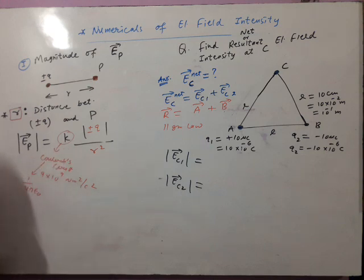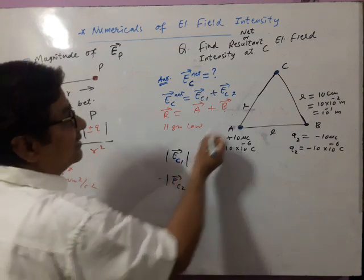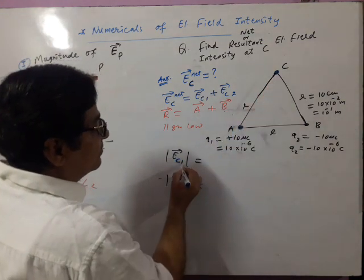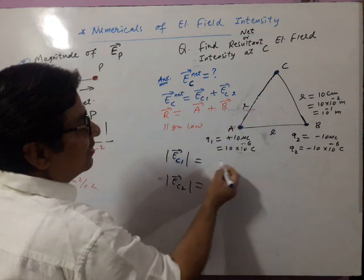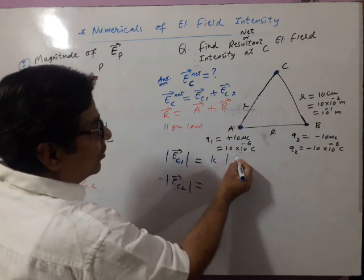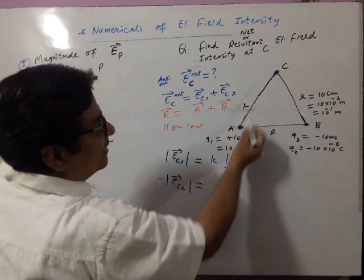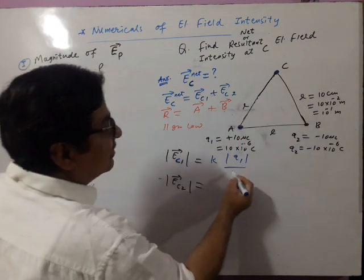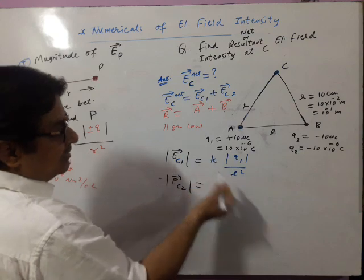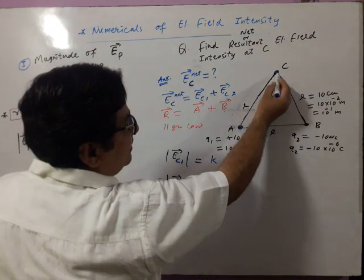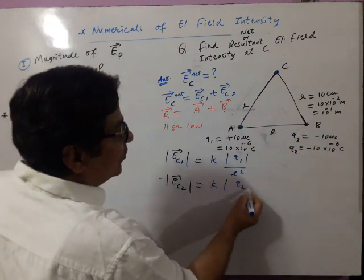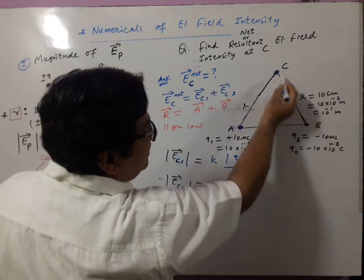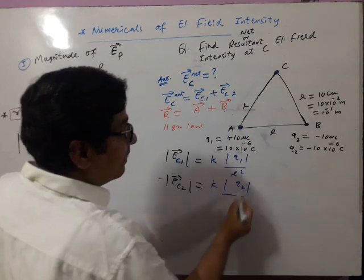We apply this formula in this numerical. For electric field intensity at C due to Q1: focus on C, focus on Q1, and distance between them is L. So you write: K mod of Q1 divided by L square. Similarly, electric field intensity at C due to Q2: K mod of Q2 divided by distance between charge and point C, which is also L square.